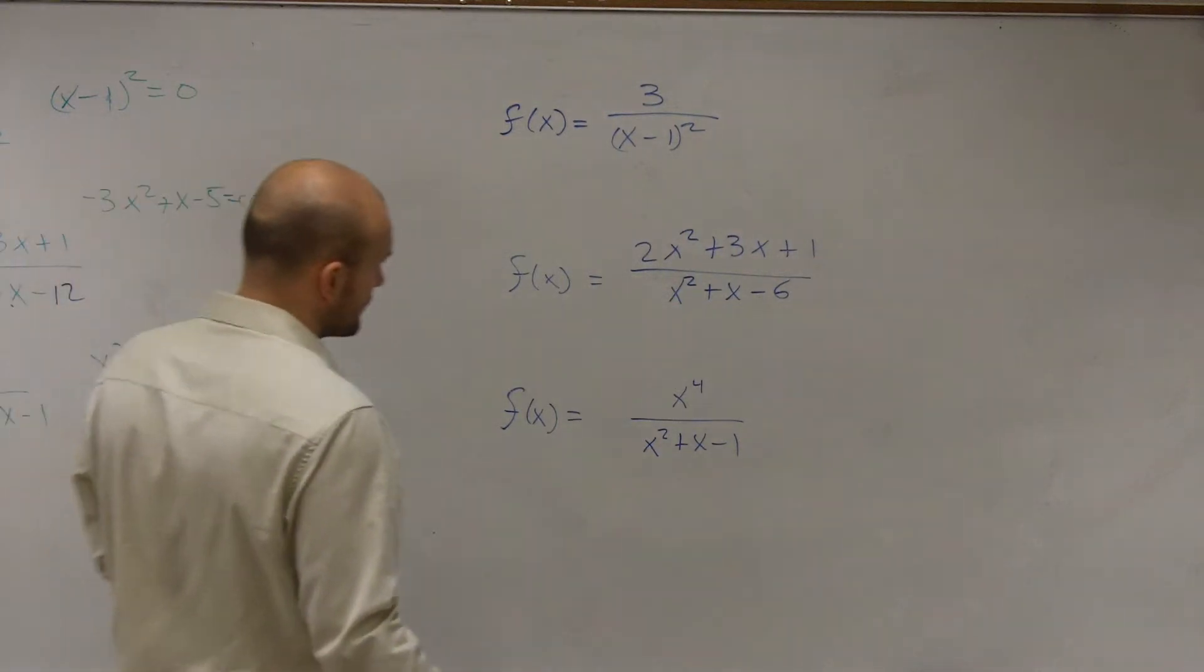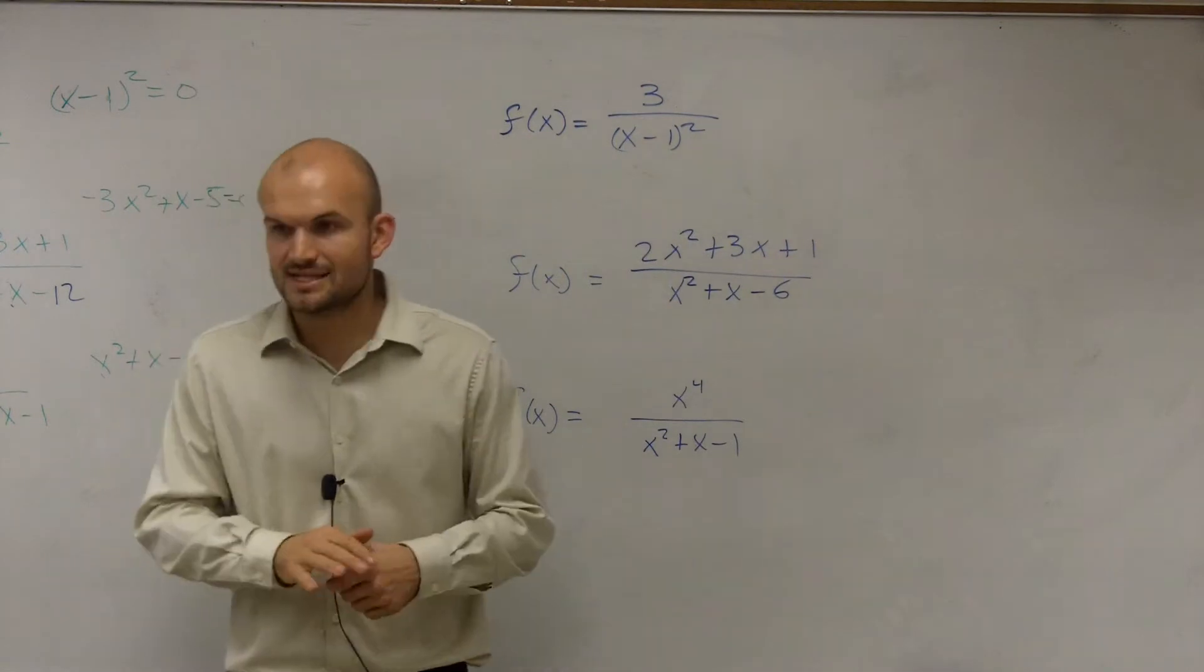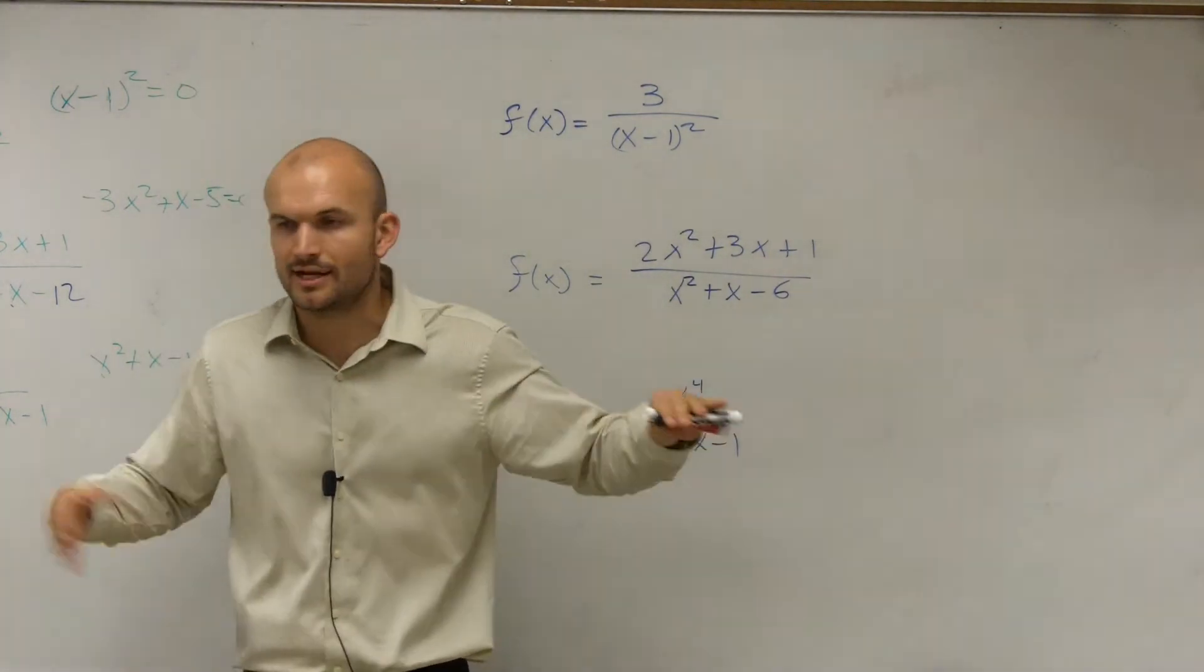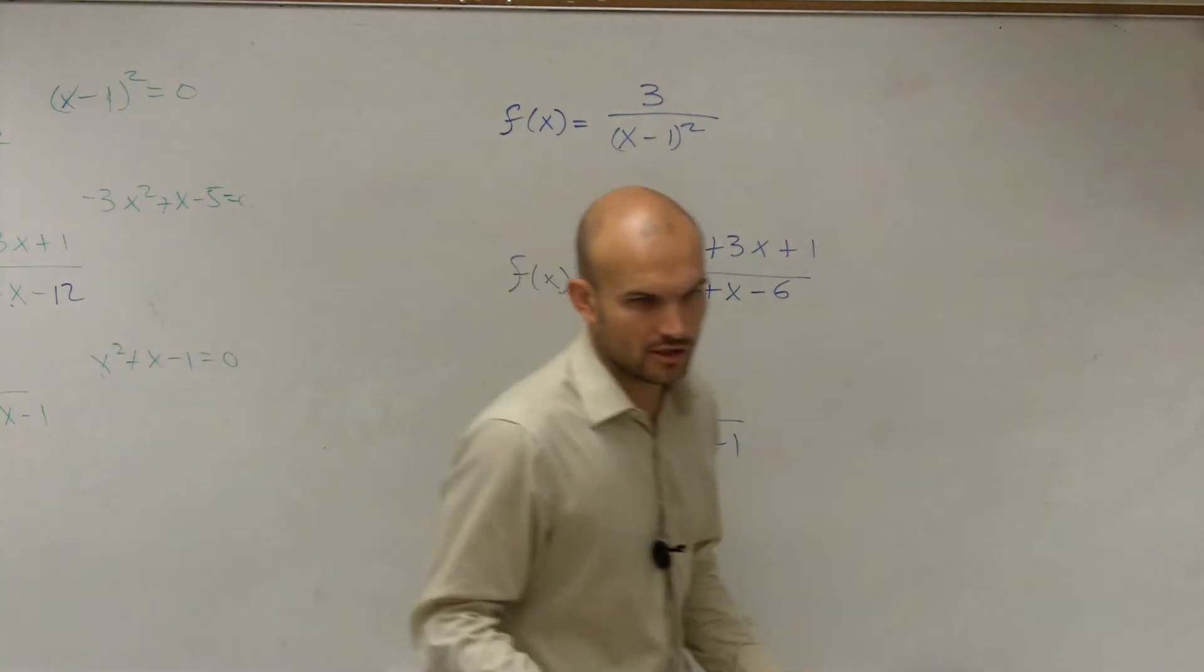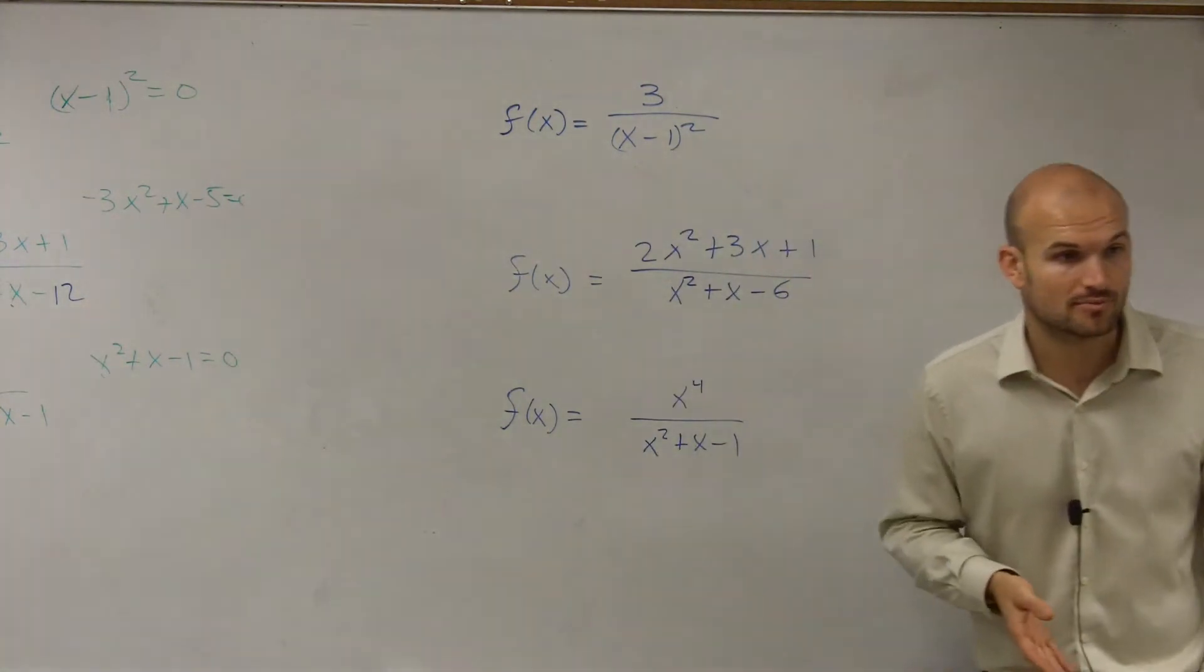So let's talk about vertical asymptotes. We talked about our horizontal asymptote, which was our horizontal line that our graph approached. Our vertical asymptote is going to be the vertical line that our graph is going to approach.